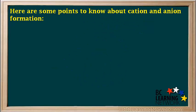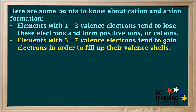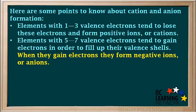Here are some points to know about cation and anion formation. Elements with one to three valence electrons tend to lose these electrons and form positive ions or cations. Elements with five to seven valence electrons tend to gain electrons in order to fill up their valence shells, and when they gain electrons, they form negative ions or anions.